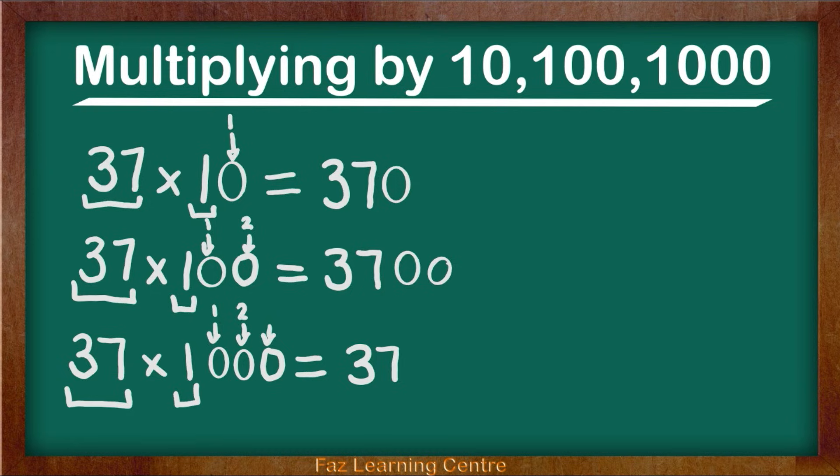We are going to write down 1, 2 and 3 on top to show you there are 3 0's in 1000. So what do we do? Yes, you are right. We dropped down 3 0's just like that.